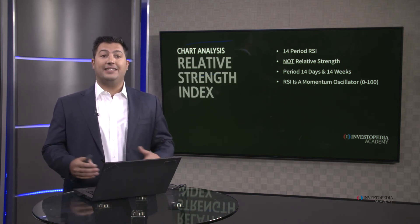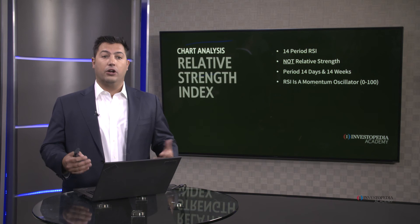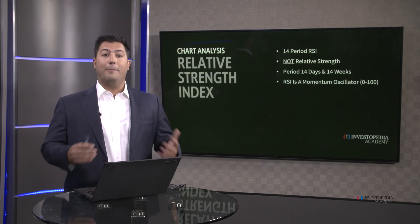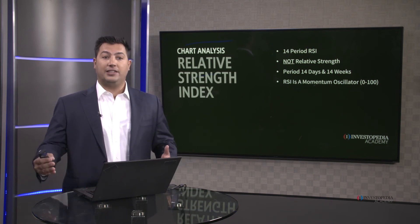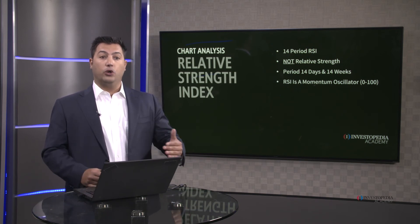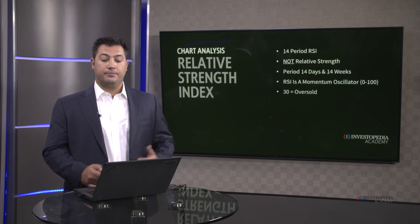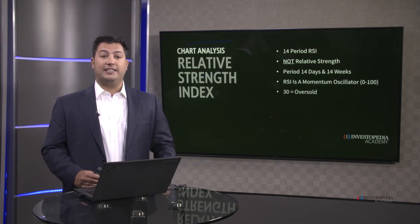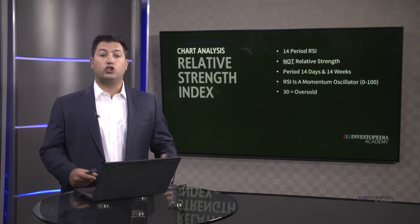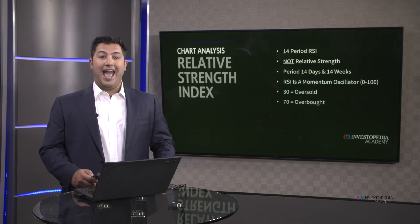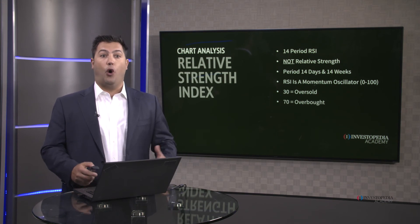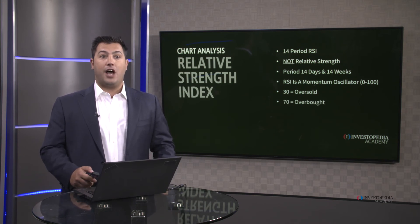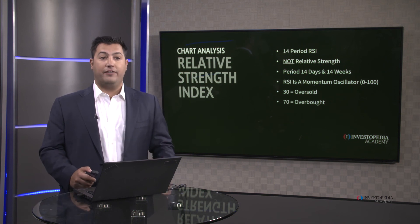The indicator goes from 0 to 100, which means the RSI is a momentum oscillator. Traditionally, 30 gives you an oversold reading and 70 gives you an overbought reading. Now we're going to talk about how we use that 30 and 70 to our advantage.